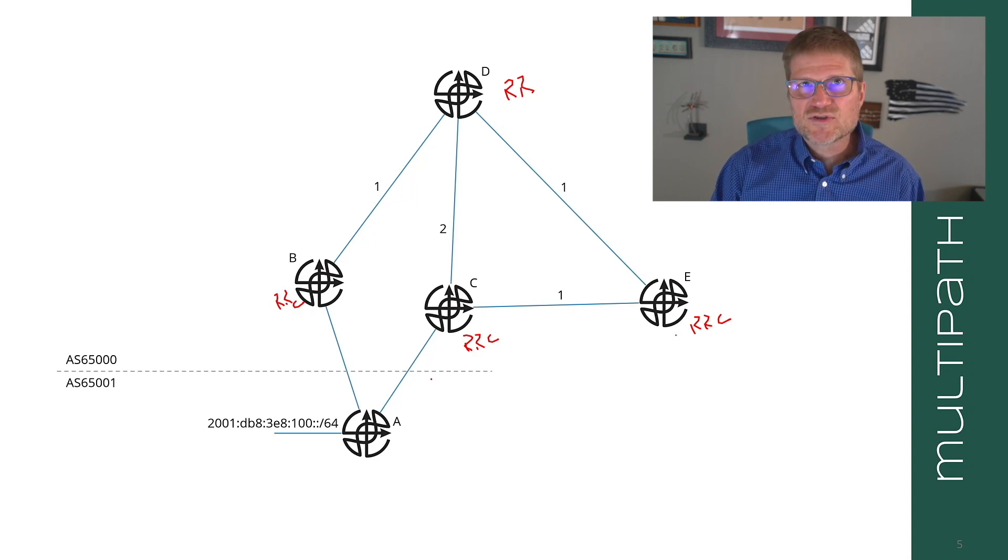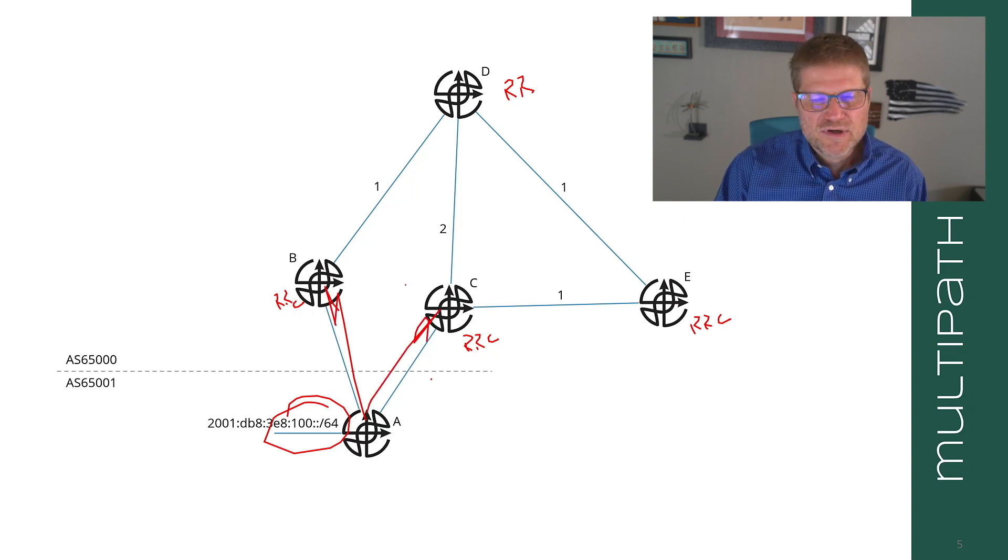Now in this situation, we're going to play a little trick to make this break correctly so you see what the problem is. From A, I am advertising this 100::/64 route to B and to C. Now for whatever reason, the network administrator has set B and C to next hop self.